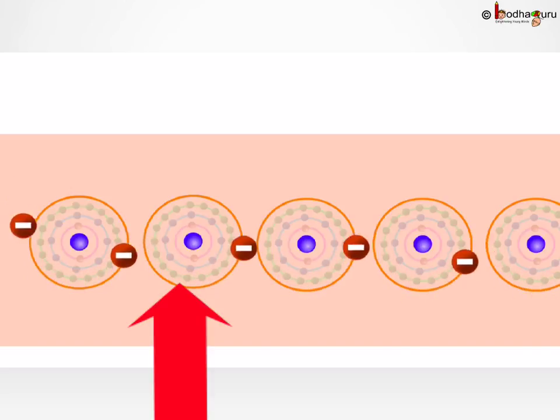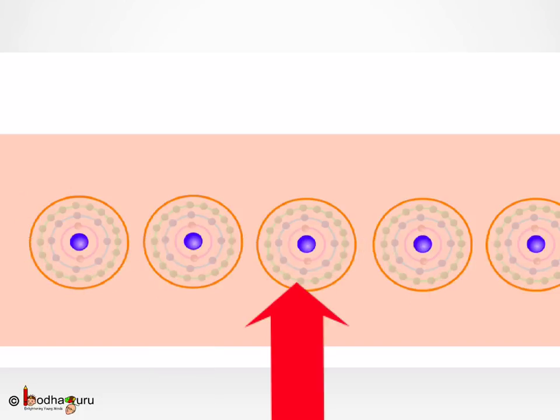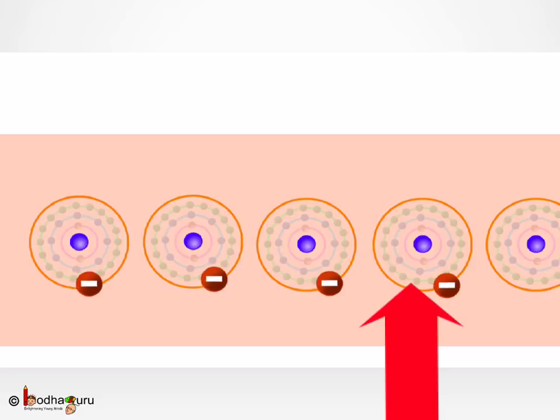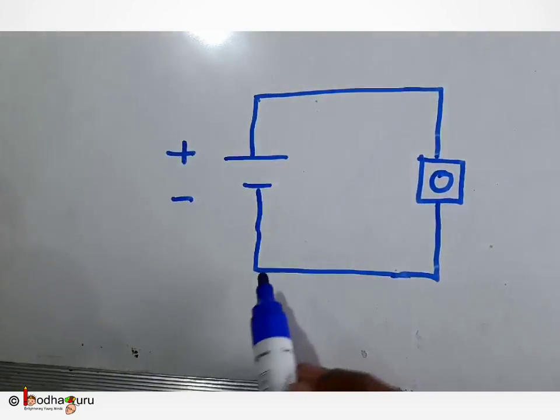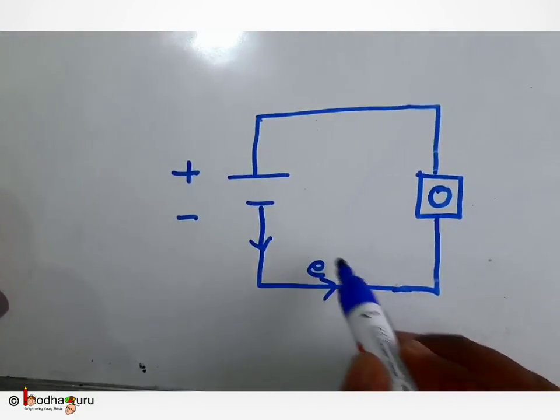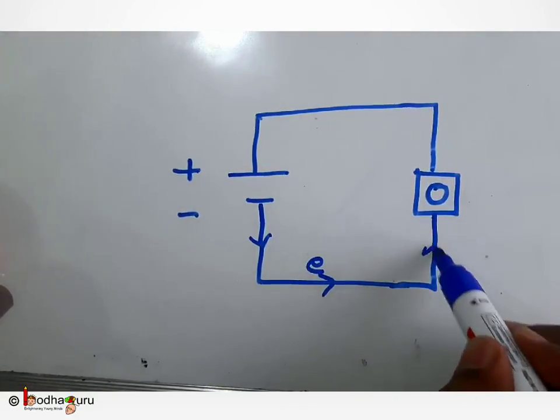Now this electron from the second atom enters the third atom's outermost shell and pushes its electron to the fourth atom, and so on. This way the process goes on. An electron moves from one atom to another until it comes to the positive end of the battery, which attracts the same.